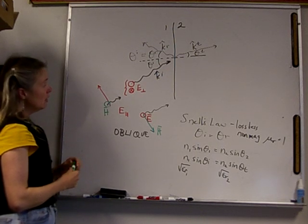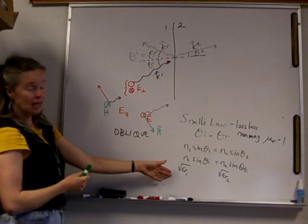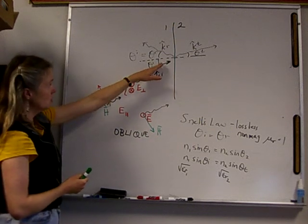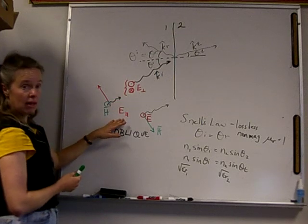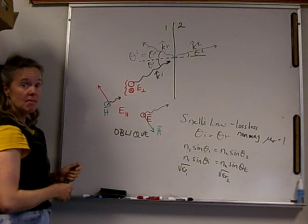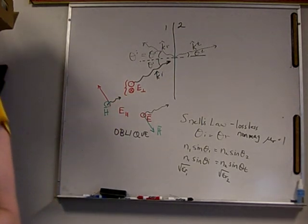So the two things that we've looked at so far are how to define the angles, how to define the directions of propagation, how to determine if we are perpendicular or parallel polarized, and how to find the magnetic field vector.